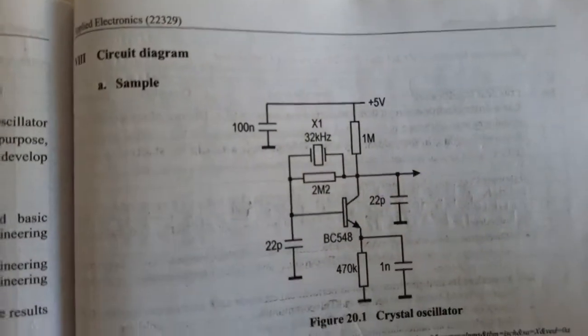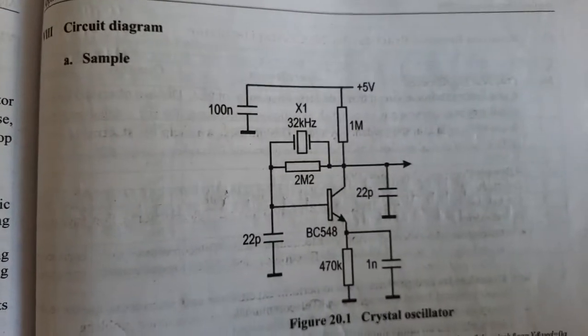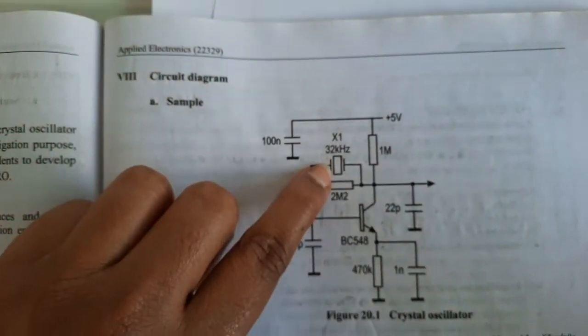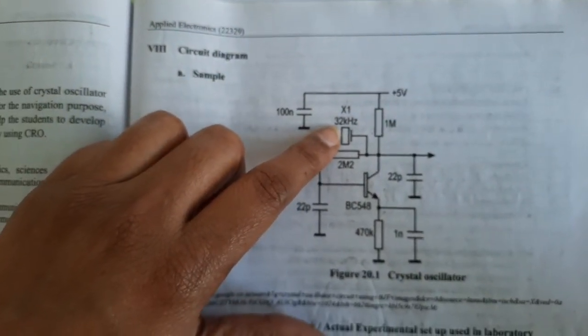This is the circuit diagram of the crystal oscillator, where we see capacitors, resistors, and the crystal used. Here the crystal is 32 kilohertz.